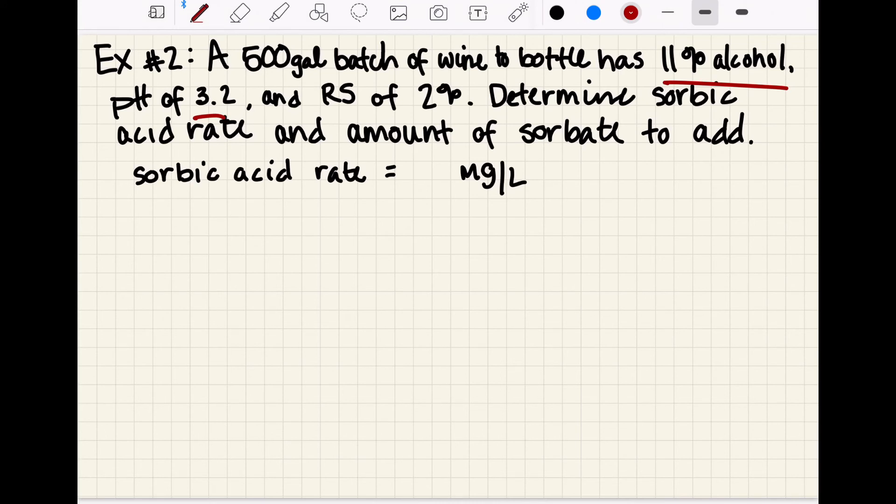So if you'll remember from our background info on sorbate, we can use less sorbate when the pH is in a good range, 3.0 to 3.7, and the higher the alcohol the better. So we have a good amount of alcohol, 11%, and a pretty low pH, so I think we can use the low end of that common range that was 150 milligrams per liter. Again, there's nothing set in stone here, you have to make the choice, but due to the low pH and the alcohol in a good range, we're going to go with a lower amount of sorbic acid to add.